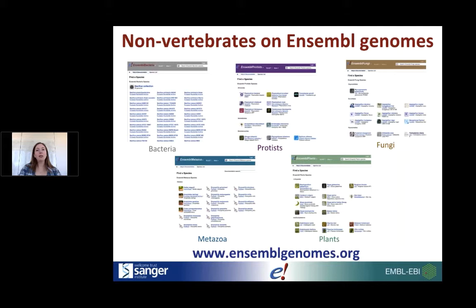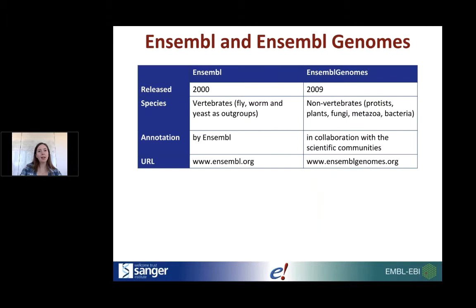As well as Ensembl, we have the Ensembl Genomes project, which focuses on non-vertebrates. The Ensembl Genomes site has five mini-sites — each with many thousands of genomes — including Ensembl Bacteria, Protists, Fungi, Metazoa, and Plants. In general the browser sites all work the same way. The main difference is that in Ensembl Genomes we don't do the gene annotation ourselves; we do it in collaboration with scientific communities and import the gene annotation along with the genome.